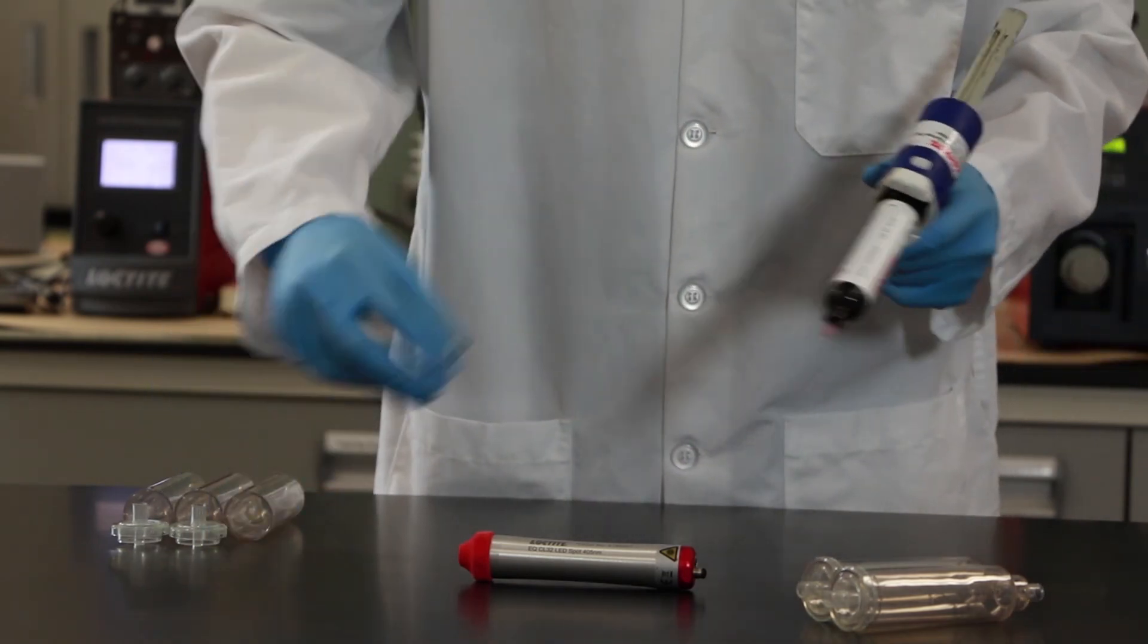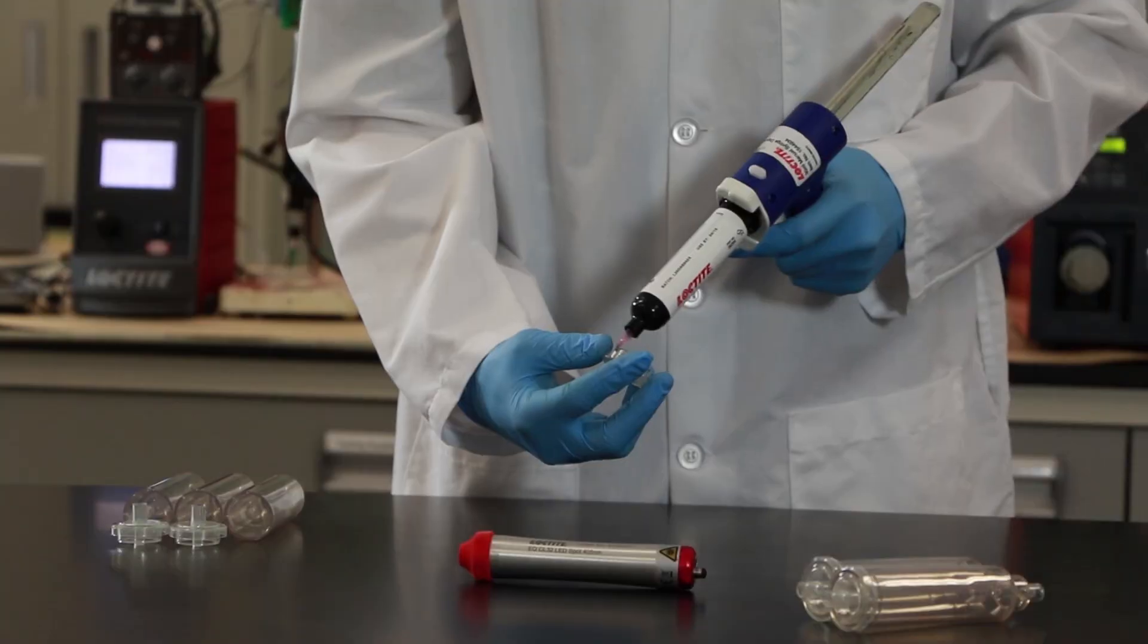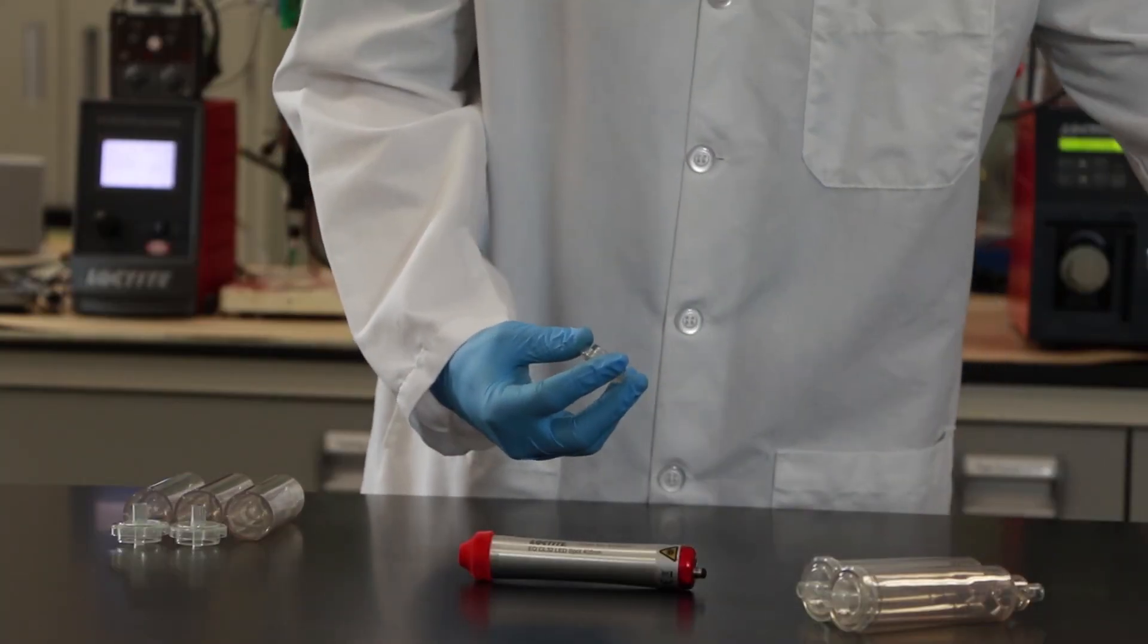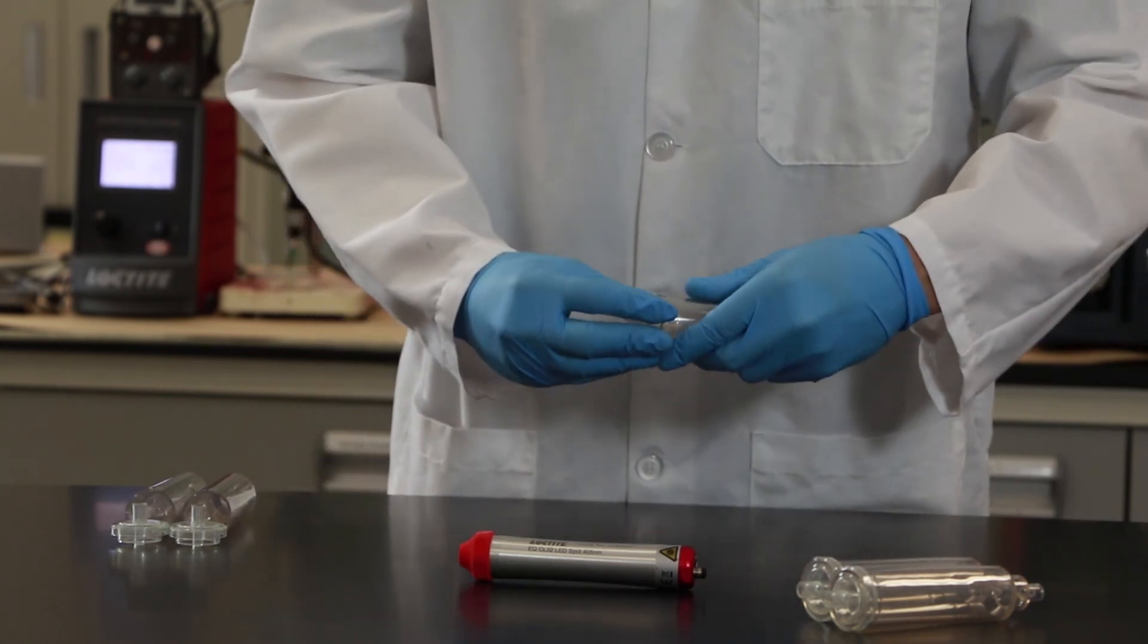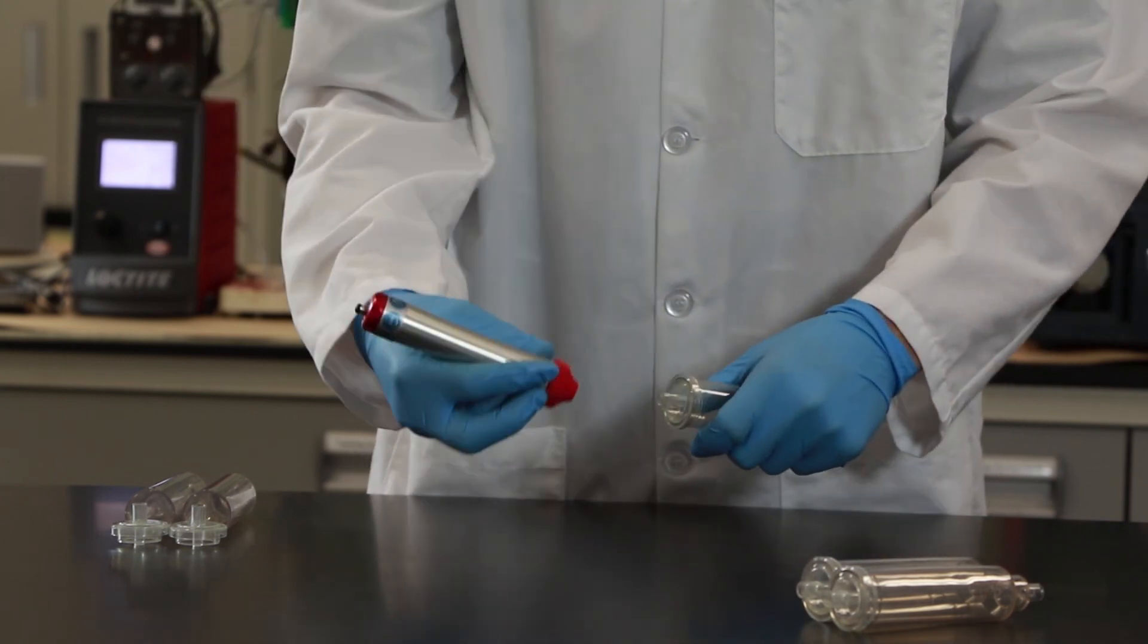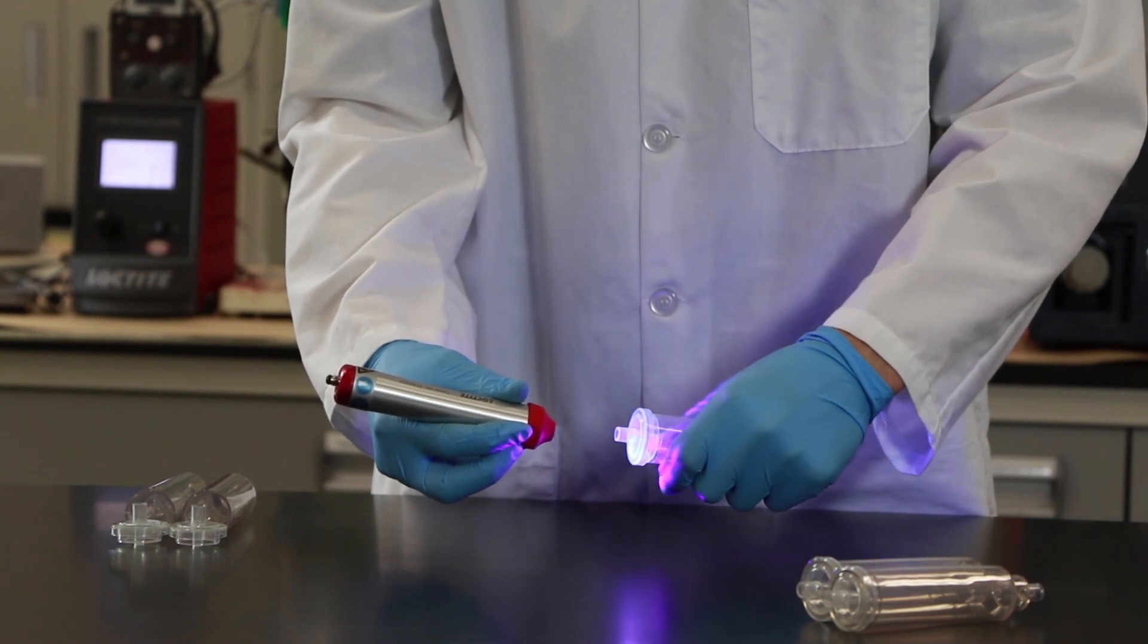For common applications, the adhesive is applied to the parts to be mated, potted, or sealed. Because the adhesive won't cure until exposed to the correct wavelength and intensity of light, parts can be adjusted without disturbing the initial bond. Once parts are aligned, the CL32 can be used to complete the curing process.